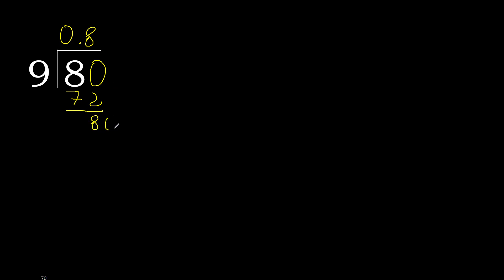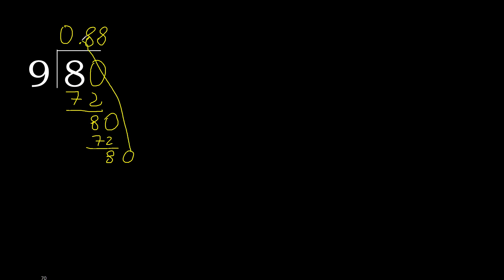That 8 is not a complete number, therefore complete with 0 — always complete with 0. The decimal point is here: 0 point. Bring down 80. 9 multiplied by 8, subtract — complete. Point is here.